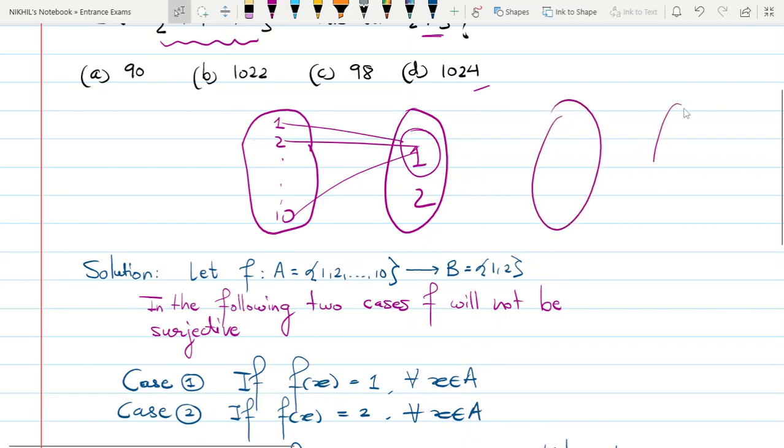Likewise, in the second case, when I have from 1, 2 till 10, and again 1, 2, if now I map all my elements of the domain to 2, then in this case my 1 element from the co-domain doesn't have any preimage. So in these two cases, my function f is not surjective, or is not onto.